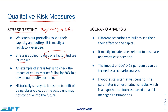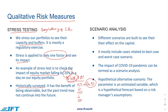In stress testing, portfolios are stressed to see their capacity and buffers. Stress is applied to only one factor at a time to see its impact. For example, we can apply stress to the equity market and assume what would happen to our capital buffers if the equity portfolio falls by twenty percent in a day — or increasing to thirty or fifty percent — to see the impact on the capital buffer. If the capital adequacy ratio is fifteen percent normally, we would see if it falls to fourteen or thirteen percent, or remains near fifteen percent.